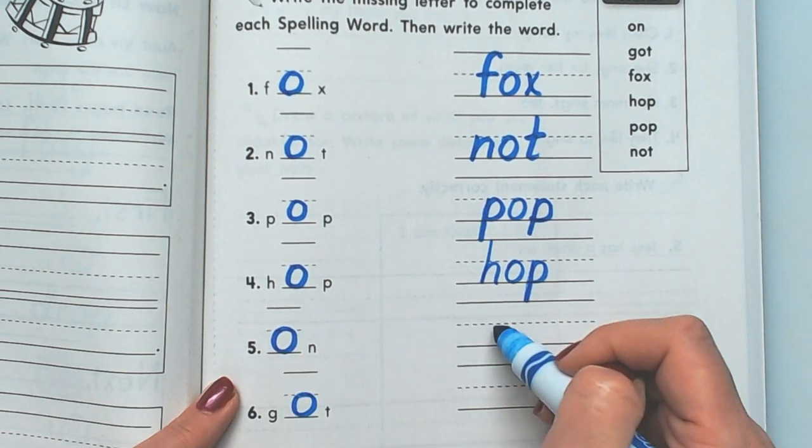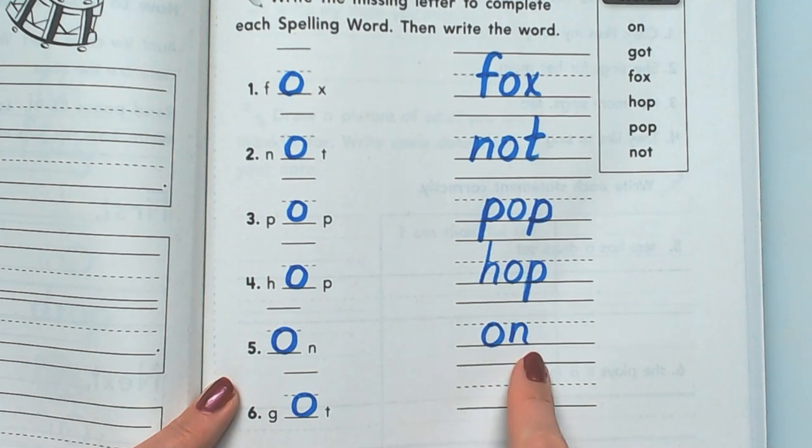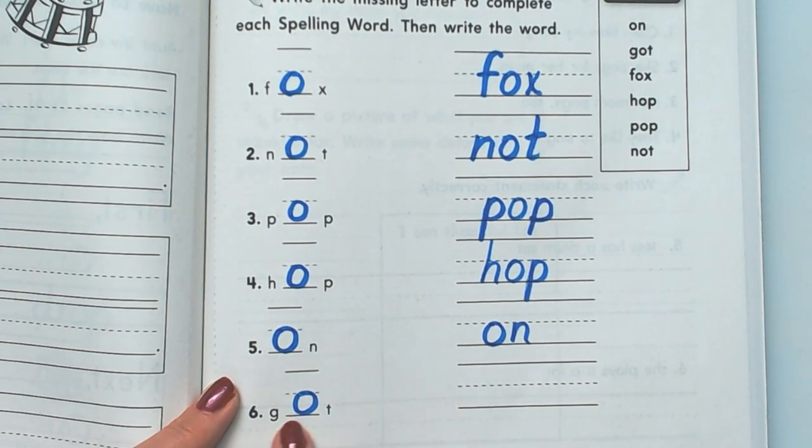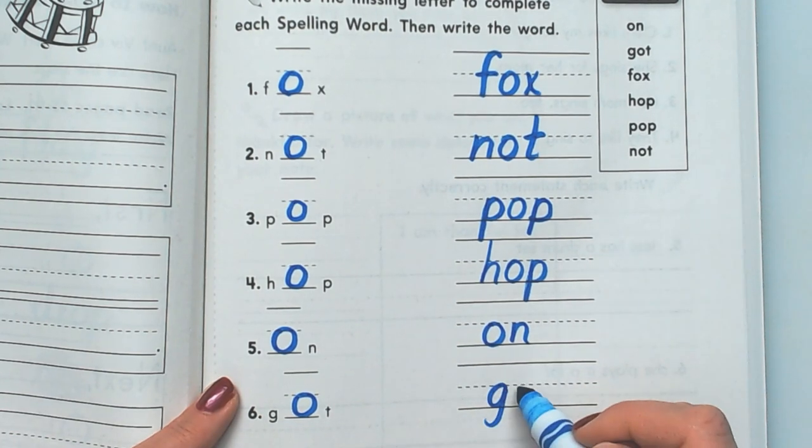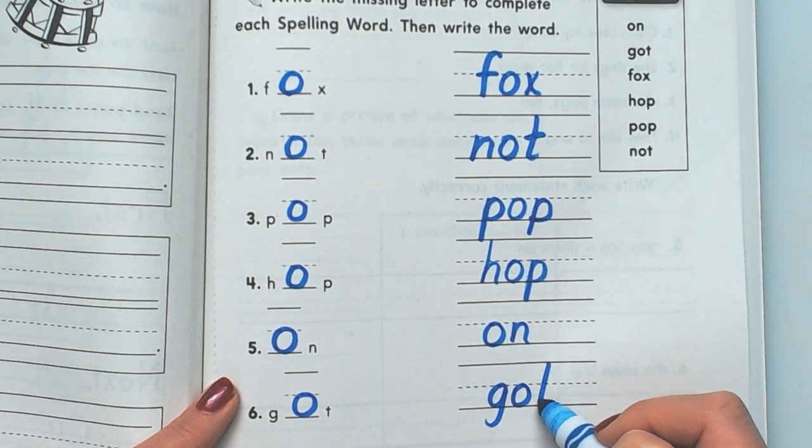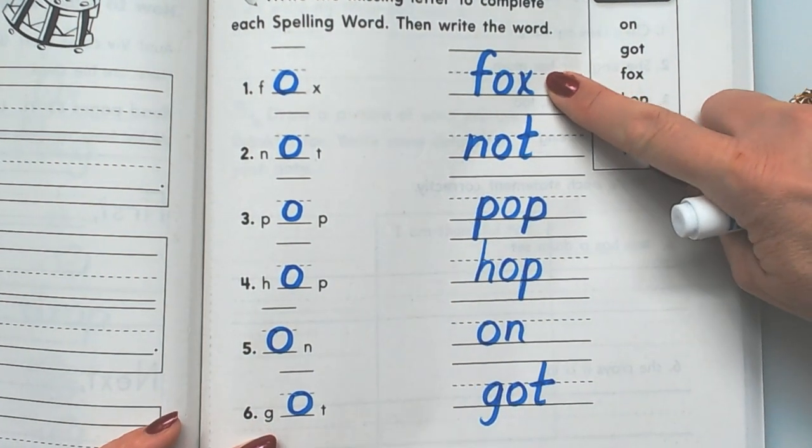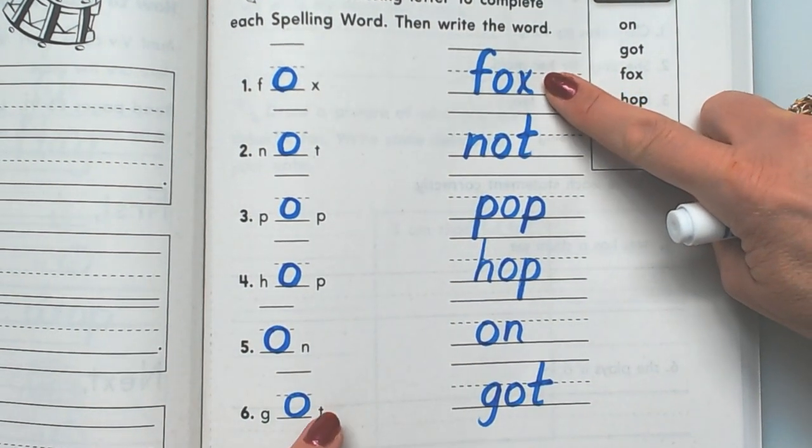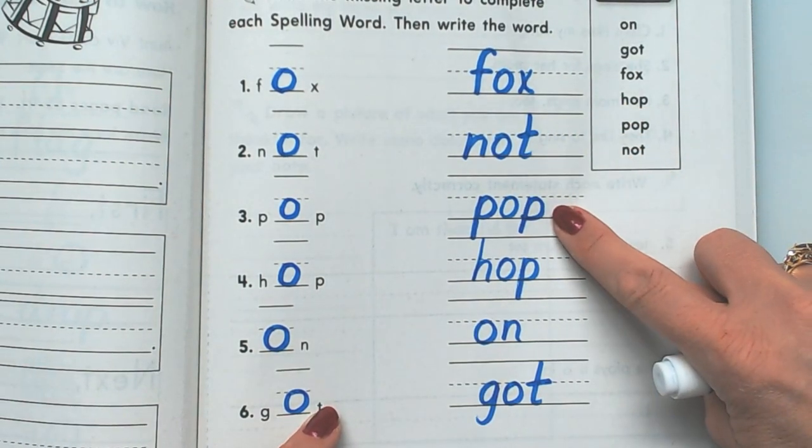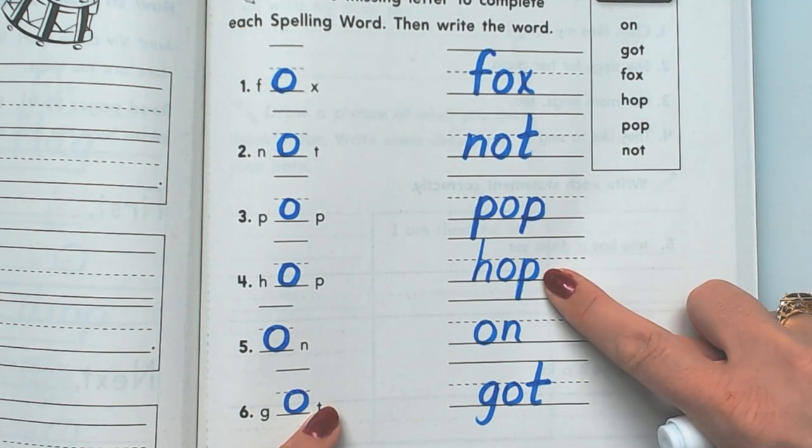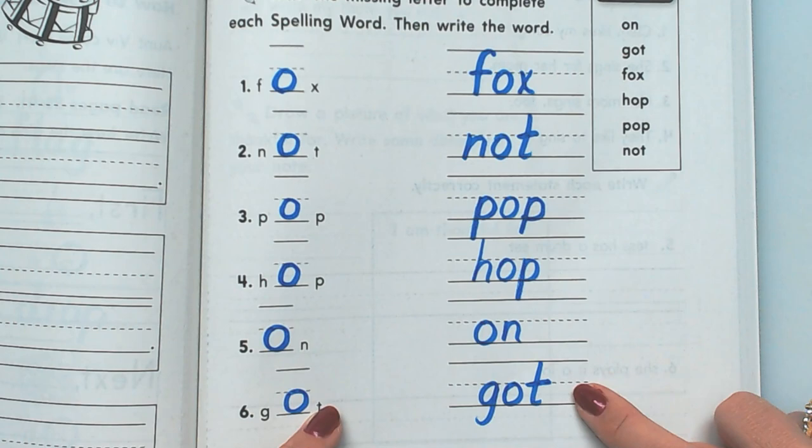On. On. And got. Got. G-O-T. Got. Okay, so let's read them one more time and we'll go on to our next page. Fox, not, pop, hop, on, got.